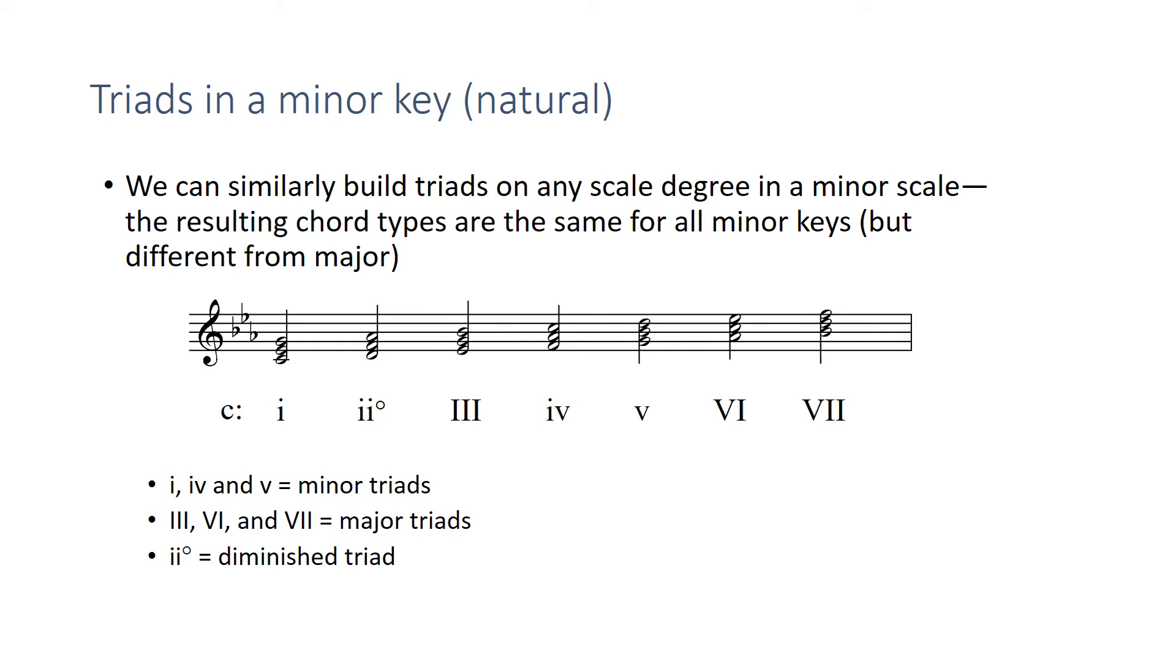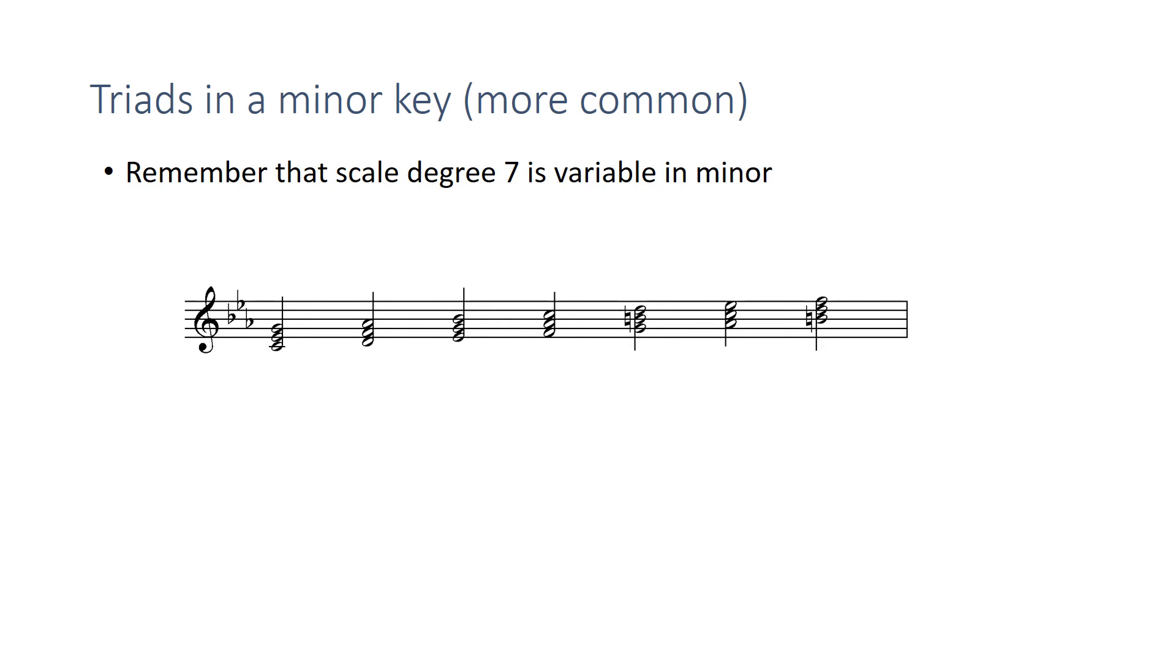Now, as you know, various scale degrees in minor can be altered, and now we're going to look at what happens when you raise those scale degrees. First of all, remember especially that scale degree seven is variable. It can sometimes be raised to the leading tone, and sometimes it's not. But for several of the chords in minor, it is customary and very common to raise scale degree seven, to raise the leading tone.